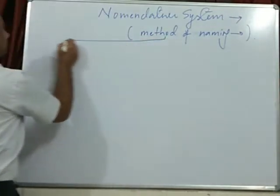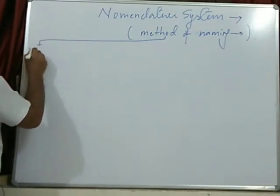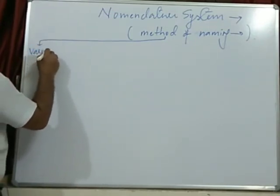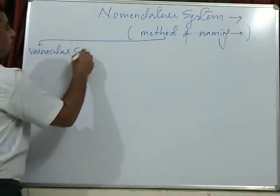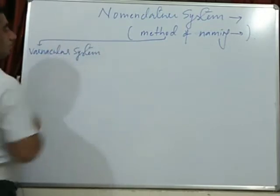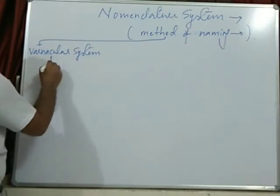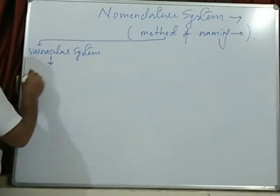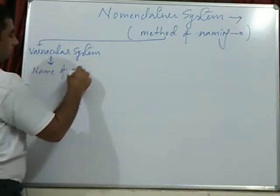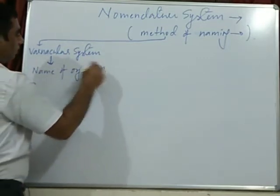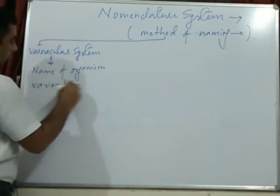There are different methods of naming, either vernacular system of naming. In this system, name of any organism varies from place to place.